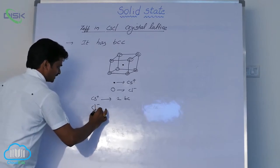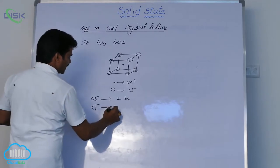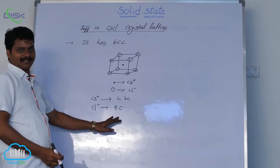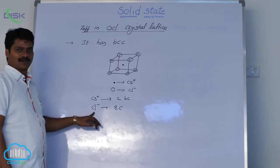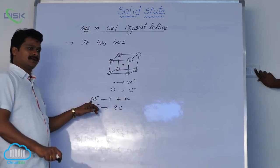Chloride ions are at the corners - eight corners. So number of lattice points: eight for chloride ions, number of lattice points for cesium is one.